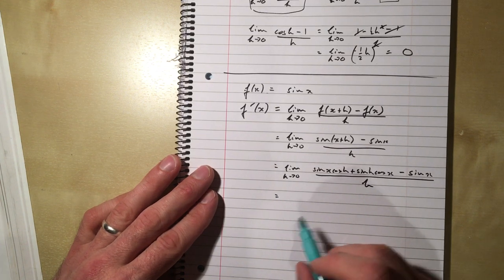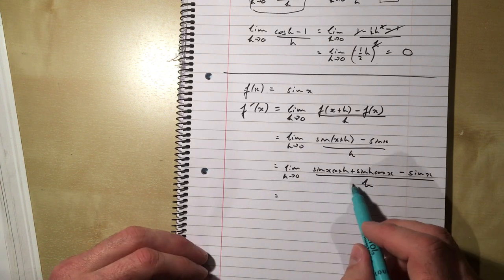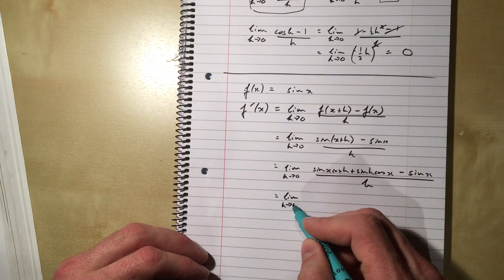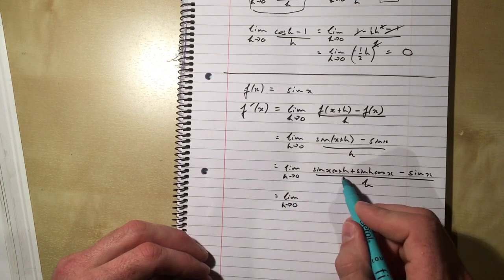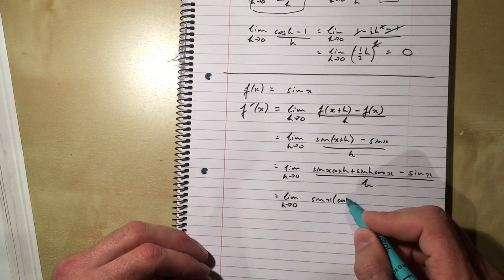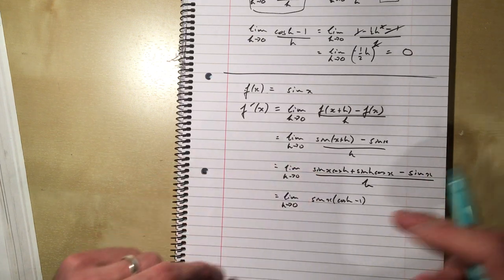So what have we got here then? Well, if we split this up into limit as h tends to 0, this is sine x times cos minus sine x. So it's sine x times cos of h minus 1, which I get from taking these two terms here and then factorising.